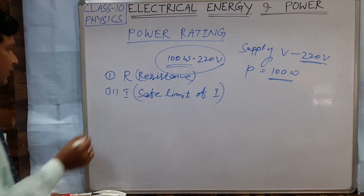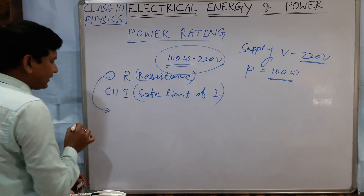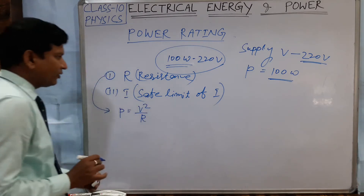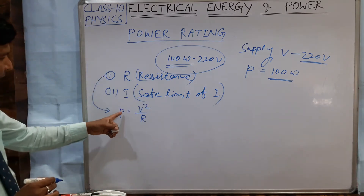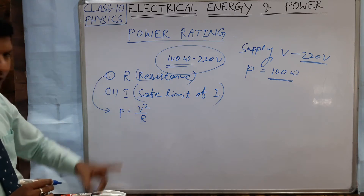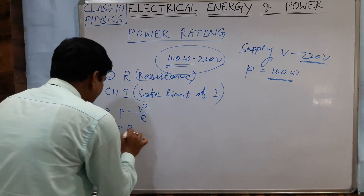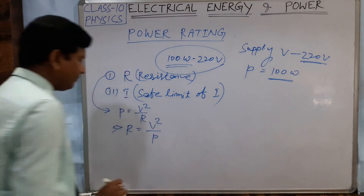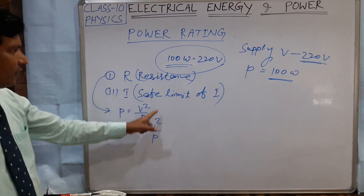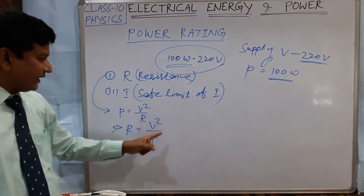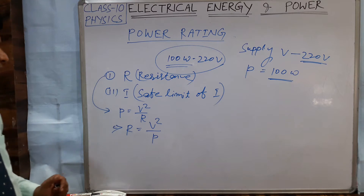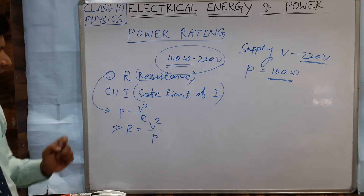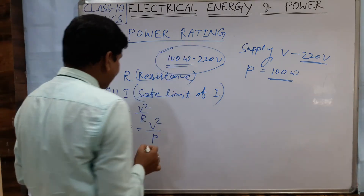How can we find the resistance? From the expression, P = V² / R. Here P and V are given, so we find R. Therefore, R = V² / P, meaning the square of the voltage divided by the power gives us the resistance of the filament of the bulb.